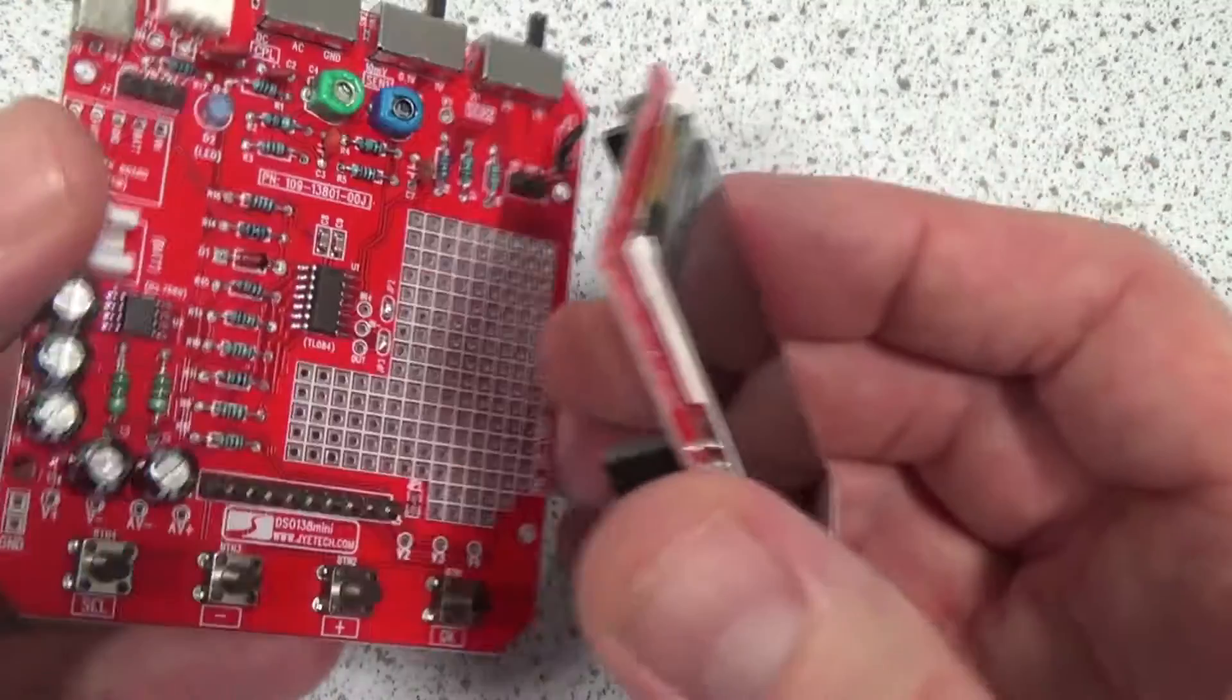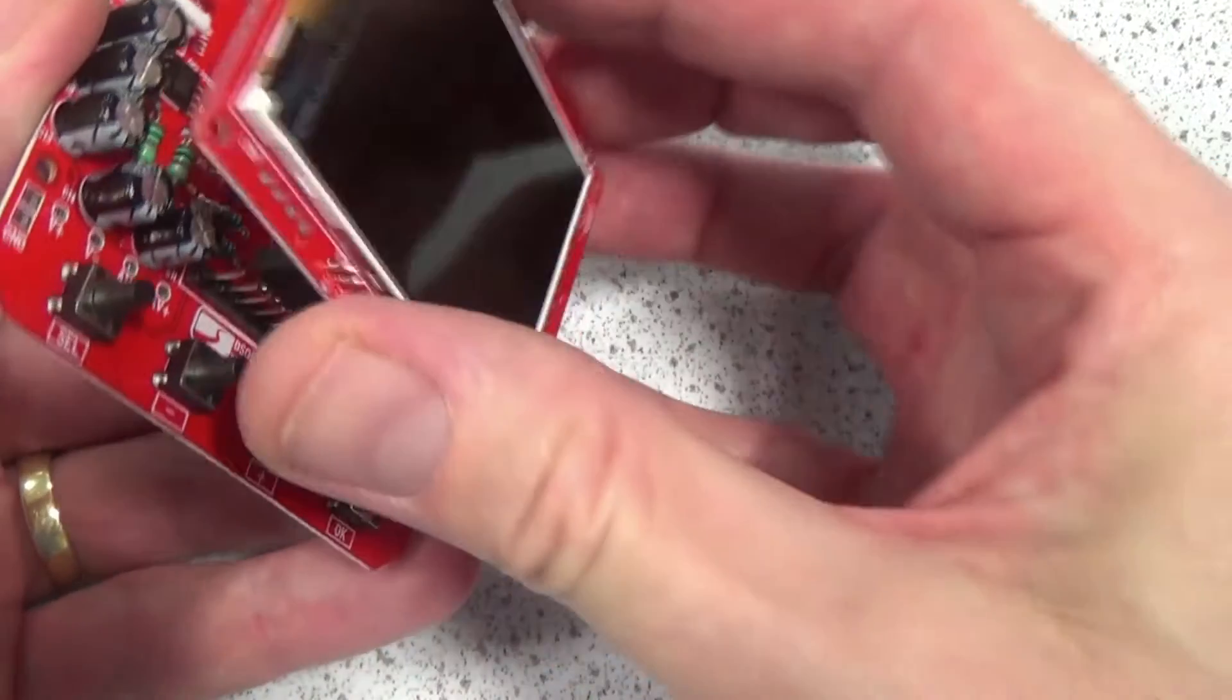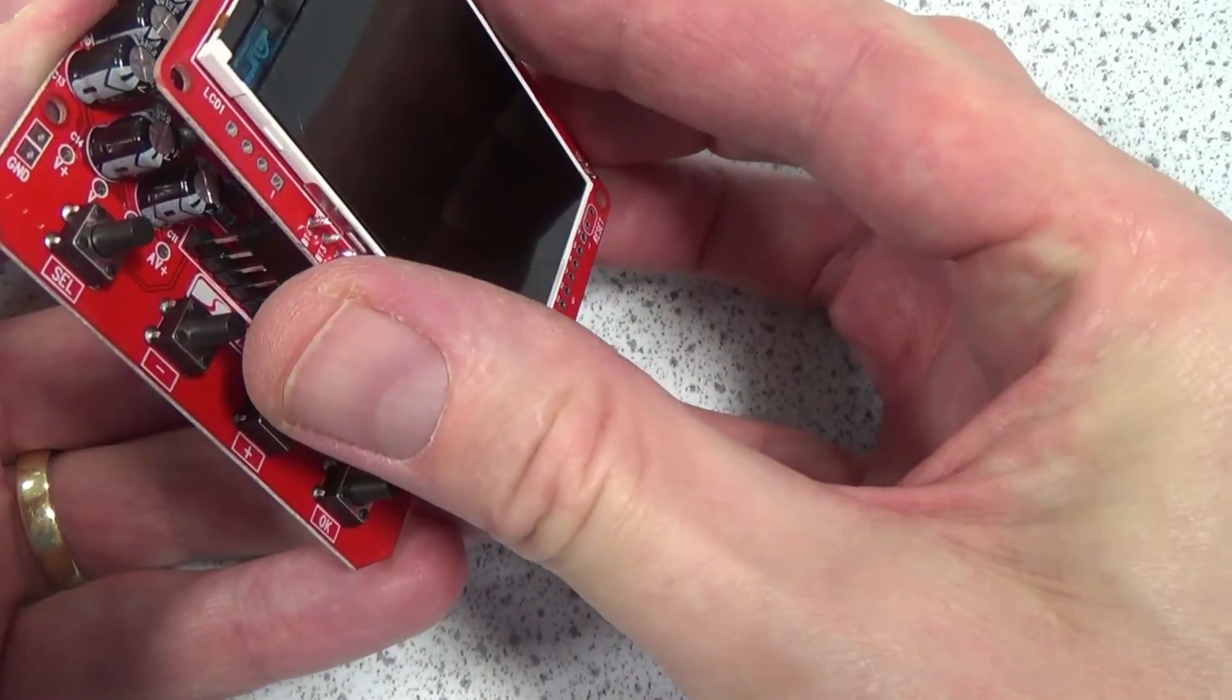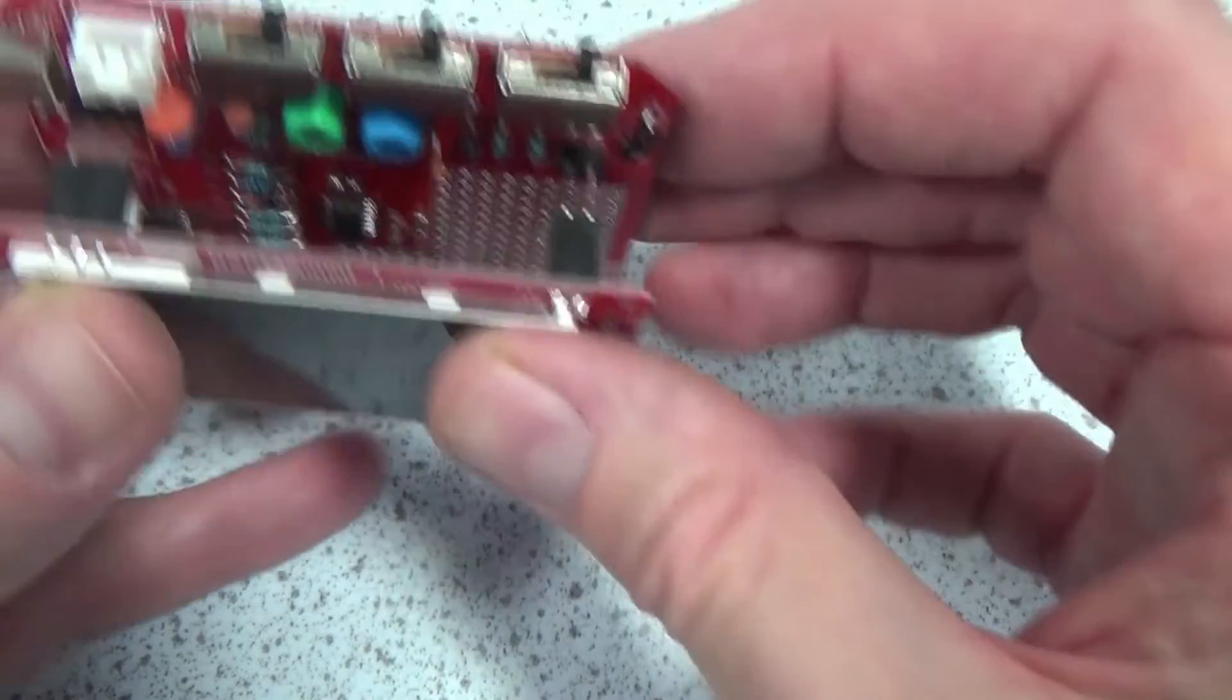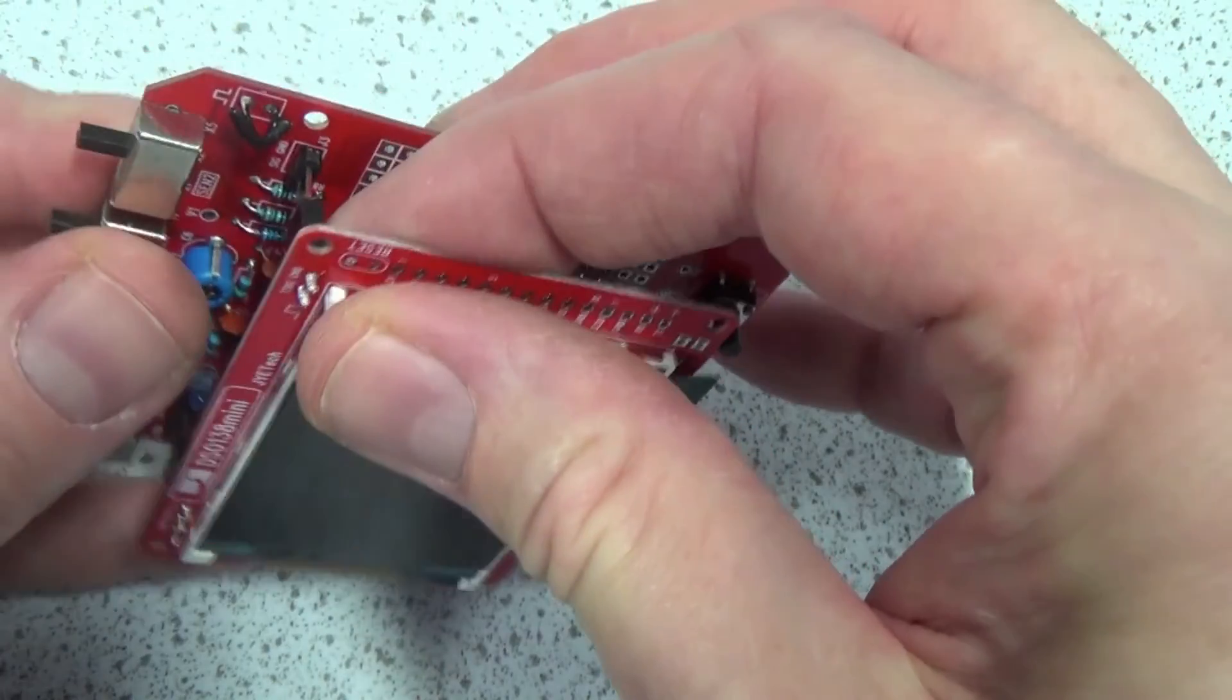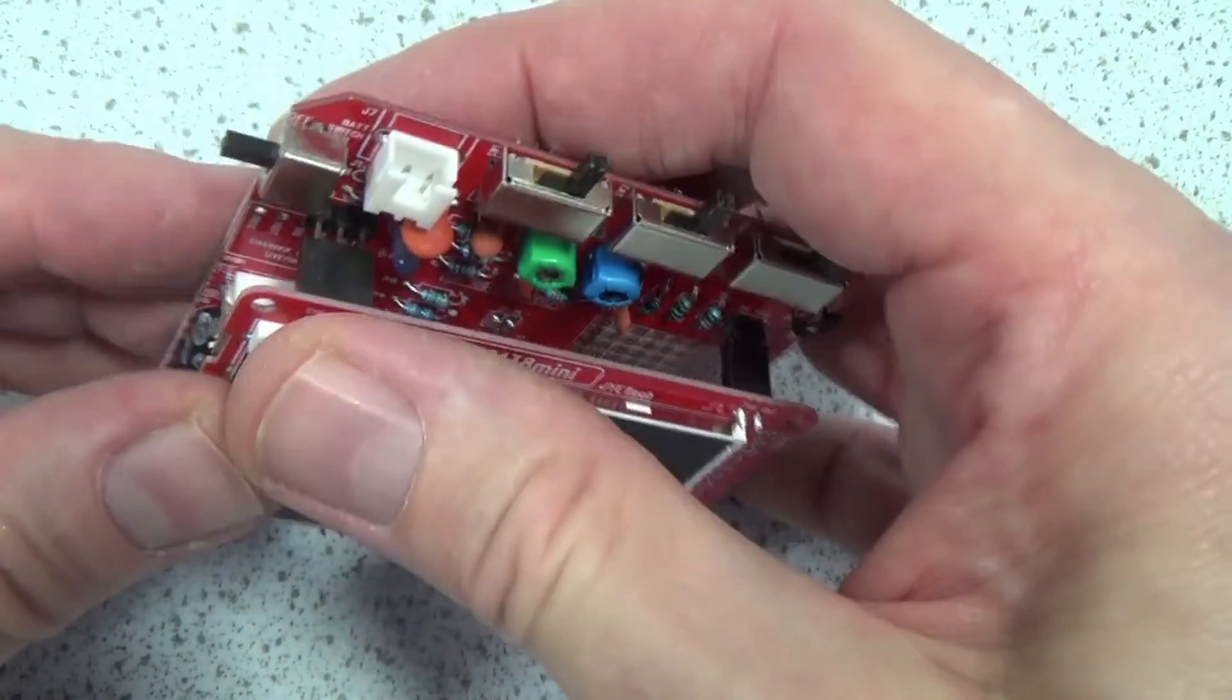So after soldering, it's time to push the two boards together and if you bought the version that comes with the case, get it inside that. You'll find instructions for this on Jitech's website, although if you're like me, you'll solder on without them, do it all wrong and have to start all over again.